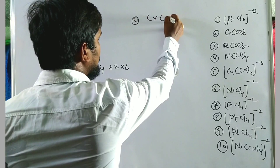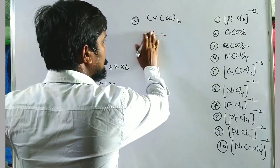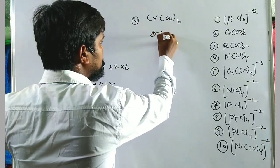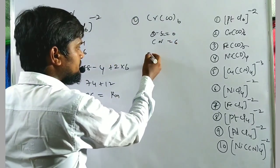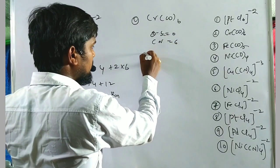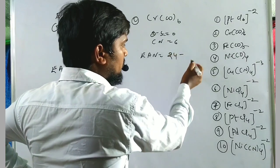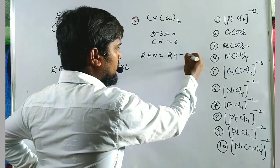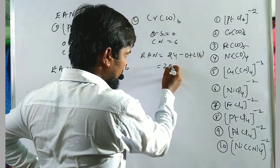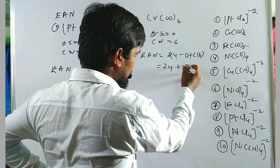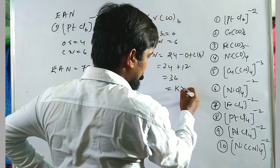Exercise example 2: [Cr(CO)6]. Chromium's oxidation state = 0, coordination number = 6. EAN = 24 − 0 + (2 × 6) = 24 + 12 = 36, which equals krypton. This complex is also stable.